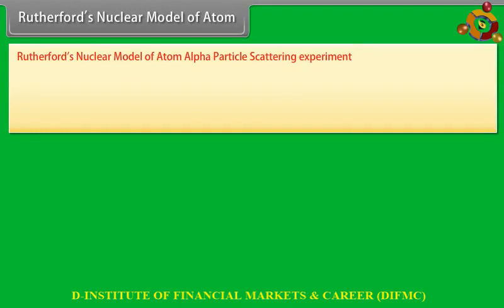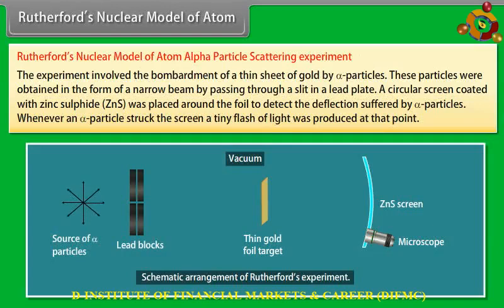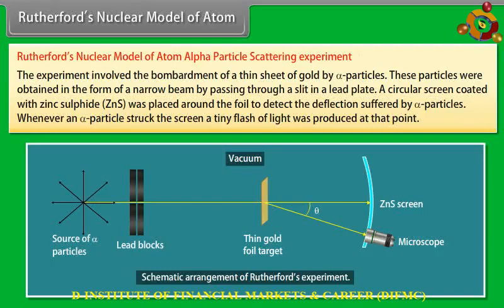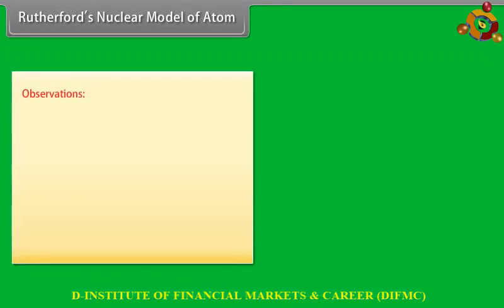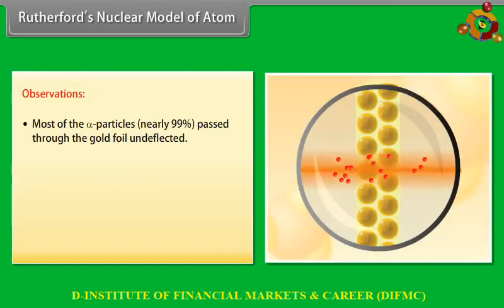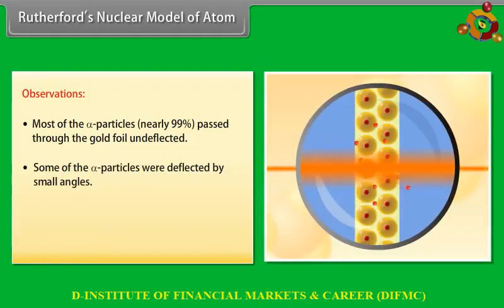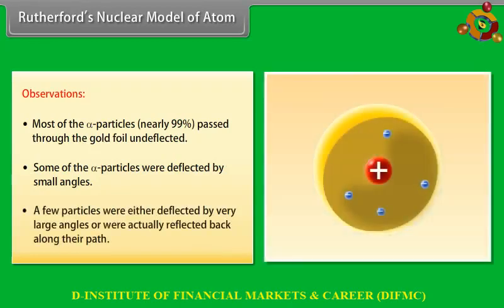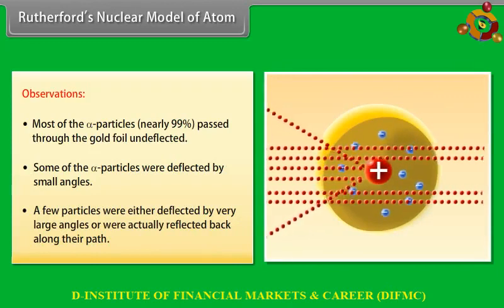Rutherford's nuclear model of atom — alpha particle scattering experiment: The experiment involved bombardment of a thin sheet of gold by alpha particles obtained as a narrow beam through a slit in a lead plate. A circular screen coated with zinc sulfide (ZnS) was placed around the foil to detect deflection of alpha particles — each strike produced a tiny flash of light. Observations: (1) Most alpha particles — nearly 99% — passed through the gold foil undeflected. (2) Some were deflected by small angles. (3) A few were deflected by very large angles or reflected back along their path.